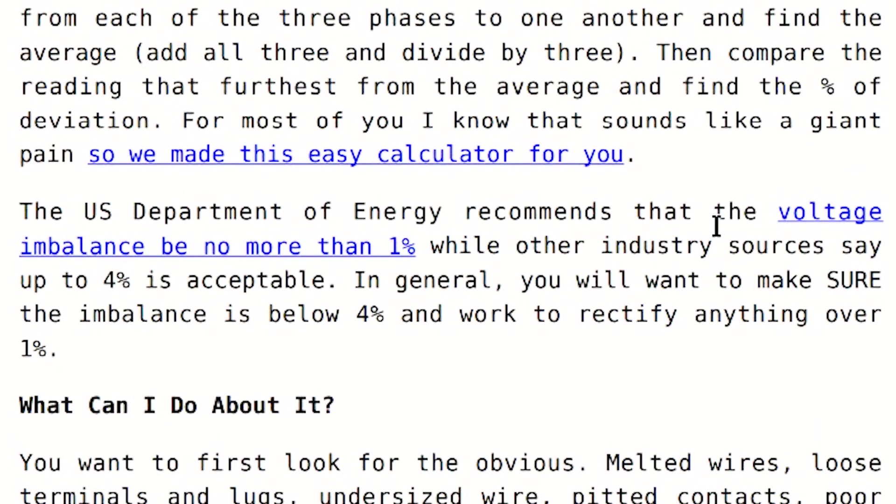What we look for is we would love to see voltage imbalance of no more than one percent. That's what the Department of Energy talks about from the standpoint of optimum efficiency. We'd like to see less than one percent variation up to four percent.